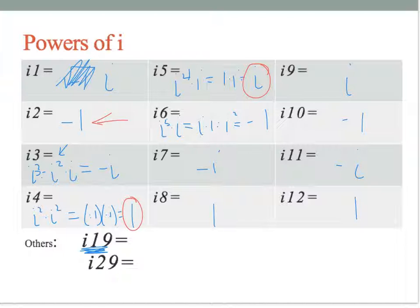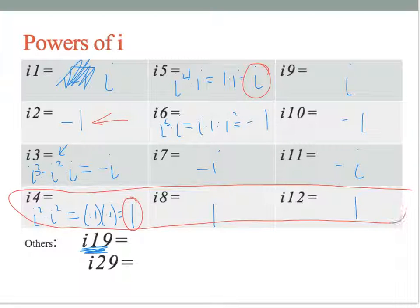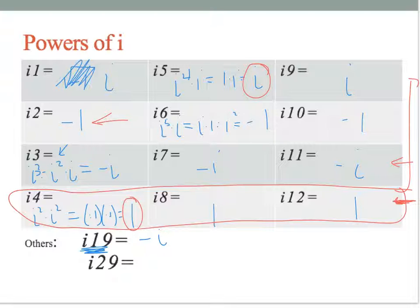To find i to the 19th, figure out which row in the cycle it falls in. The exponents divisible by 4 all equal 1 — so i to the 20th is divisible by 4 and falls in that row, meaning i to the 19th is on the previous row: negative i. For i to the 29th, i to the 28th is divisible by 4, so i to the 29th is on the first row: i.